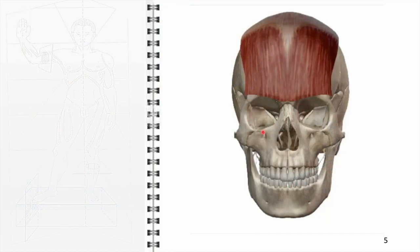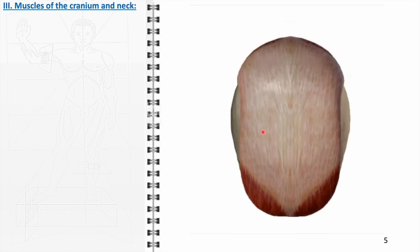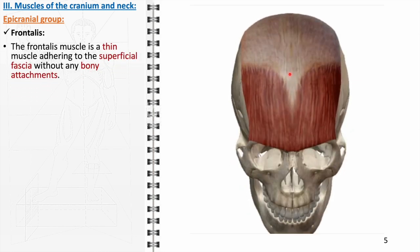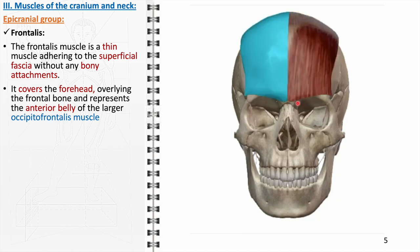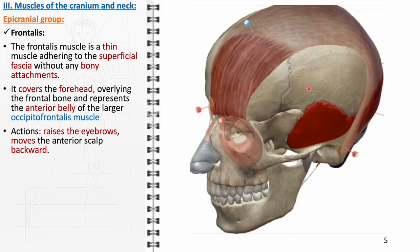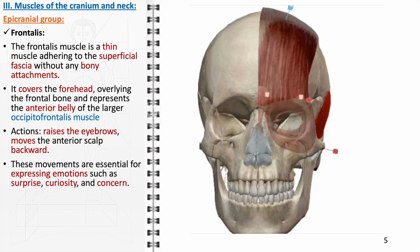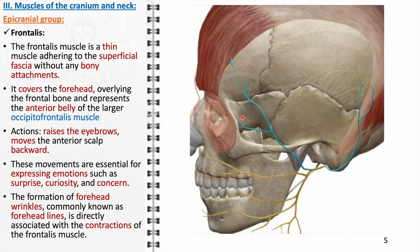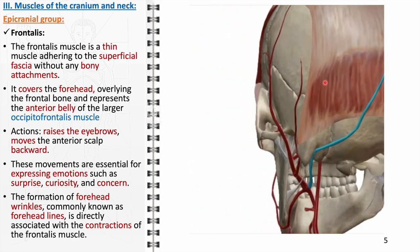Let's now delve into the facial muscles, beginning with the muscles of the cranium and neck. The frontalis muscle, a component of the epicranial group, is a thin muscle adhering to the superficial fascia without bony attachments. It covers the forehead, overlying the frontal bone, representing the anterior belly of the occipitofrontalis muscle. Its primary actions include raising the eyebrows and moving the anterior scalp backward, forming forehead wrinkles. It is innervated by the temporal branch of the facial nerve, with blood supply from the supratrochlear and supraorbital arteries.